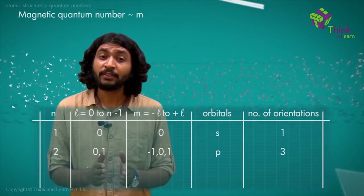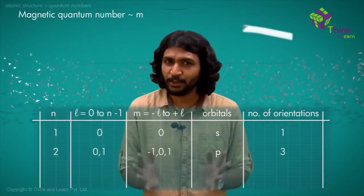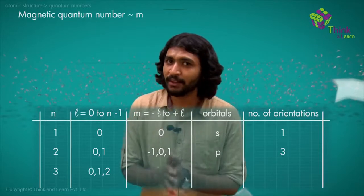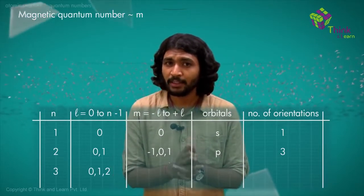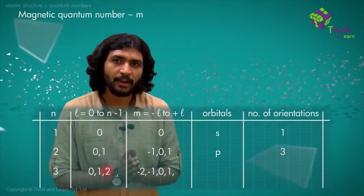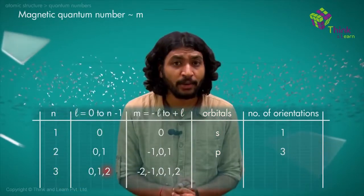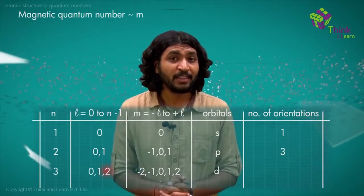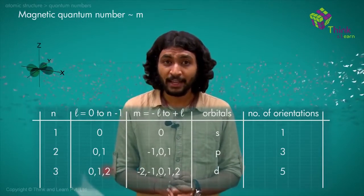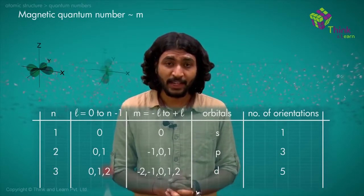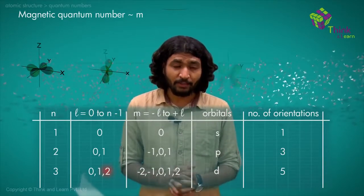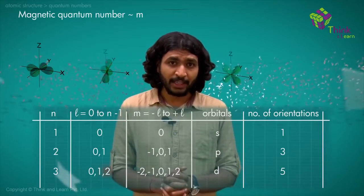For energy level 3, N = 3, so L = 0, 1, 2. For L = 2, the magnetic quantum number M = −2, −1, 0, +1, and +2, giving five different D orbitals oriented in space around the nucleus. These are: dxy, where the lobes are oriented between the x and y axes; dyz, oriented between the y and z axes; and dxz, oriented between the x and z axes.